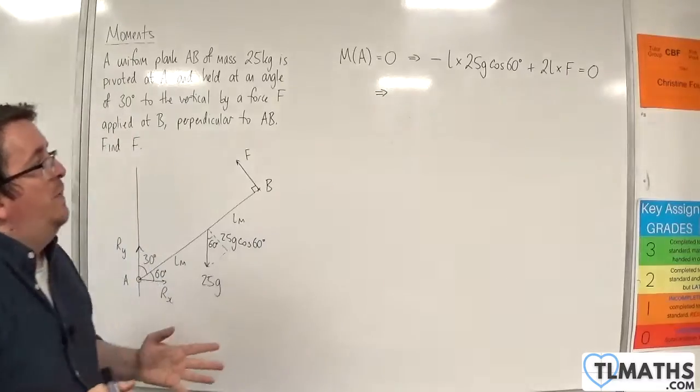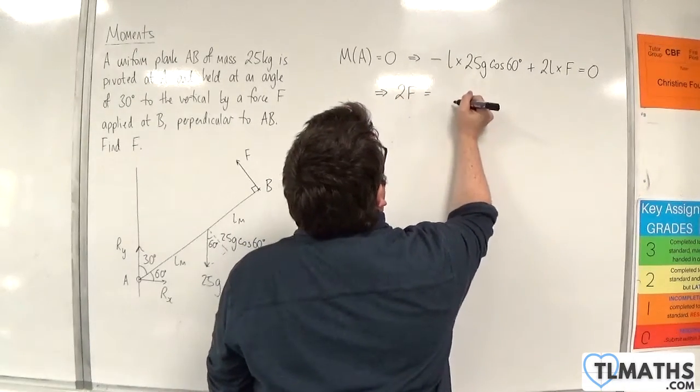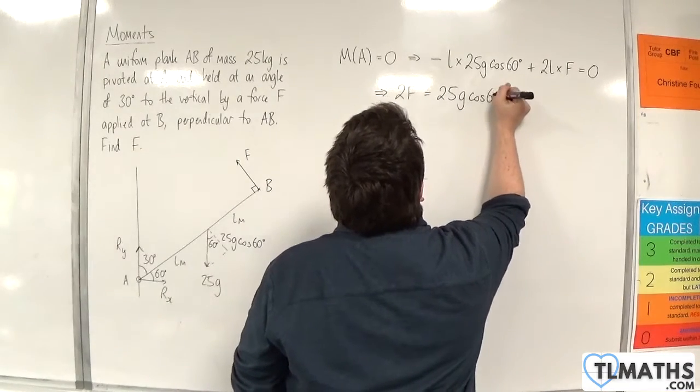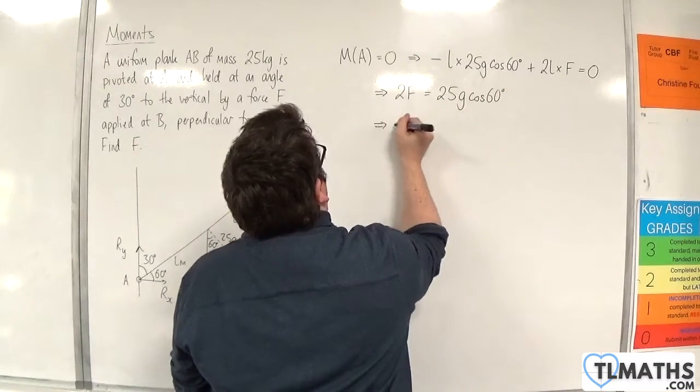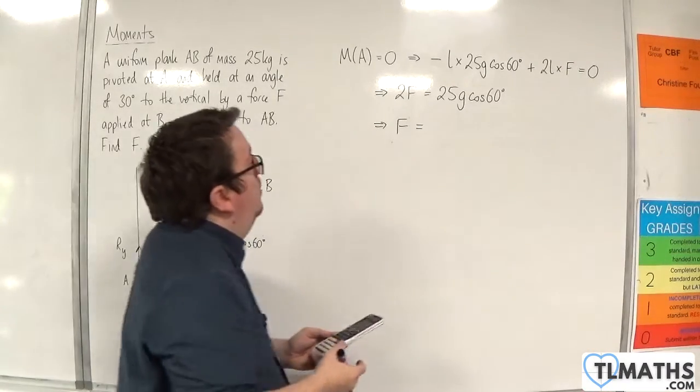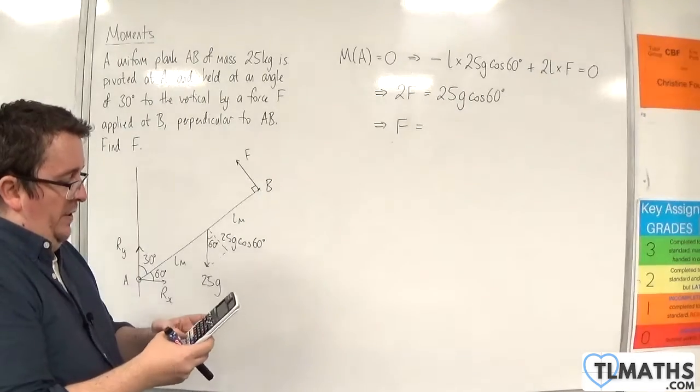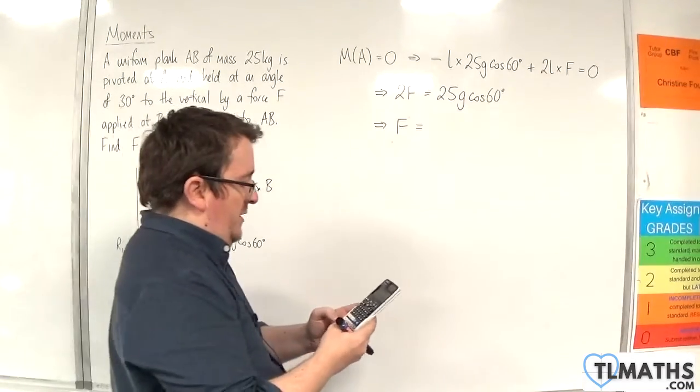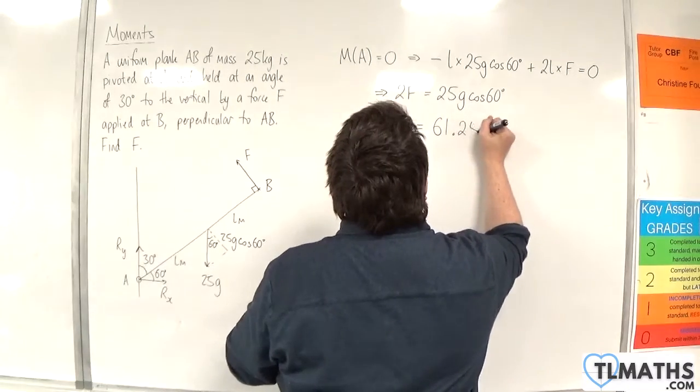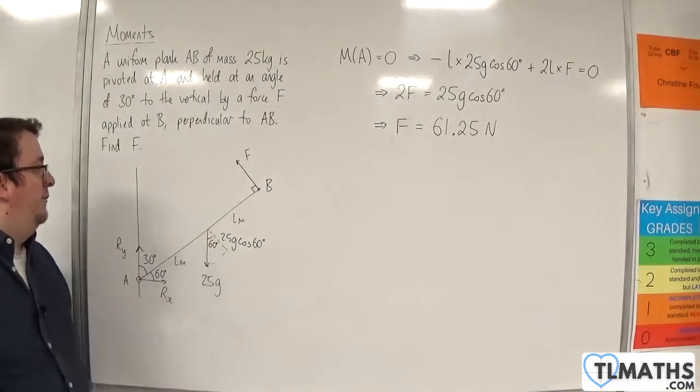So I can divide through by L and get rid of that straight away. And we get 2F is going to be equal to 25G cosine 60. So I'll put G as 9.8. 25 times 9.8 times cosine of 60, divide through by 2, and we get 61.25 Newtons. And so that's F as required.